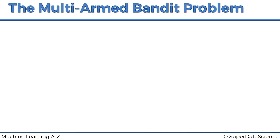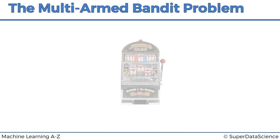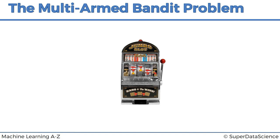So what on earth is a multi-armed bandit? The first thing that comes to mind is like a robber going into a bank, but actually a one-armed bandit is a slot machine. Why is it called the one-armed bandit? Back in the day, slot machines had a handle on the right that you had to pull to initiate the game — hence the arm. Now they're all electronic and you just press a button, but back then you had to pull the lever to make it work.